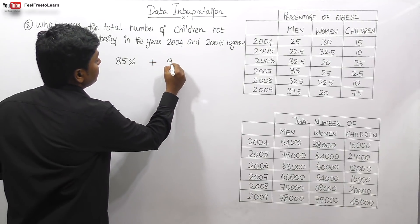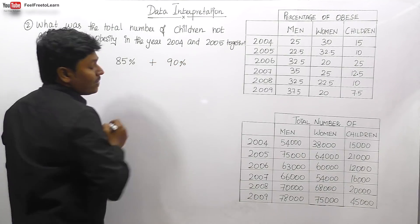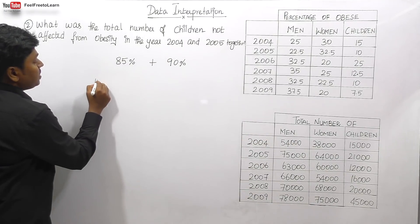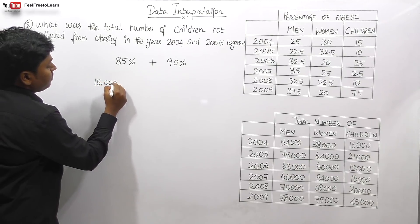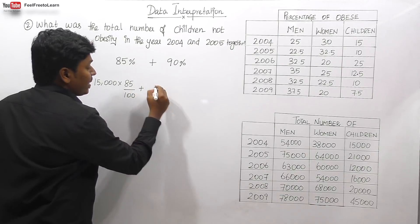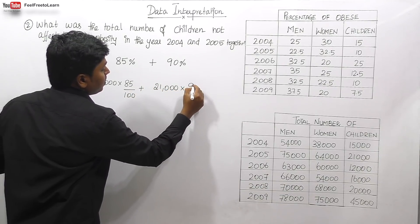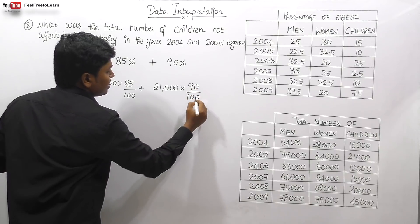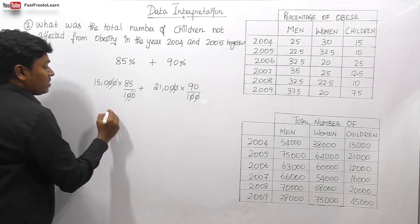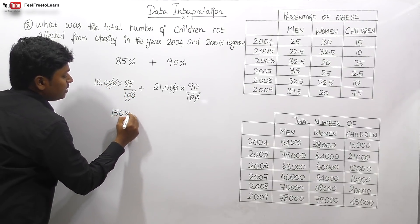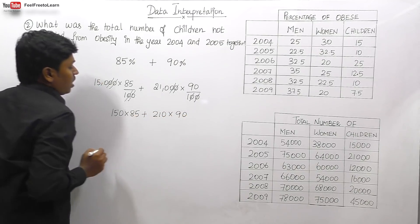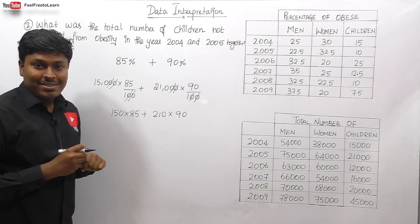So 90% of children are not affected in 2005. For 2004: out of 15,000, we find 85%. For 2005: out of 21,000, we find 90%. Canceling zeros, we get 150 into 85 plus 210 into 90.